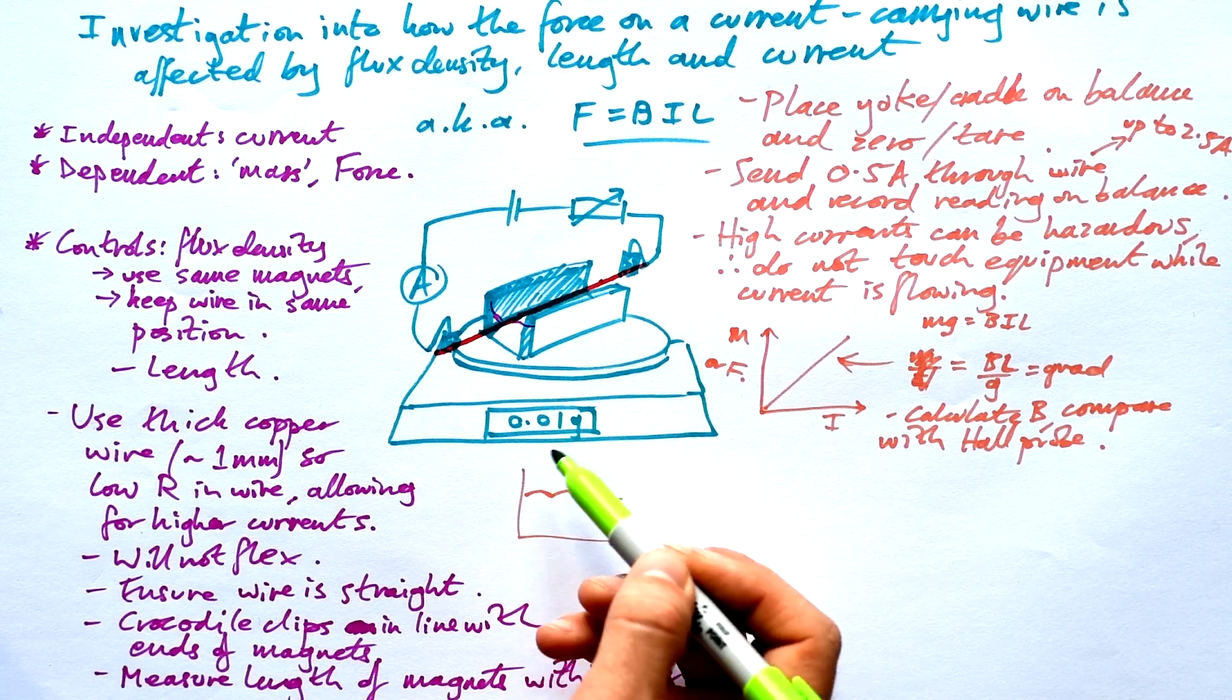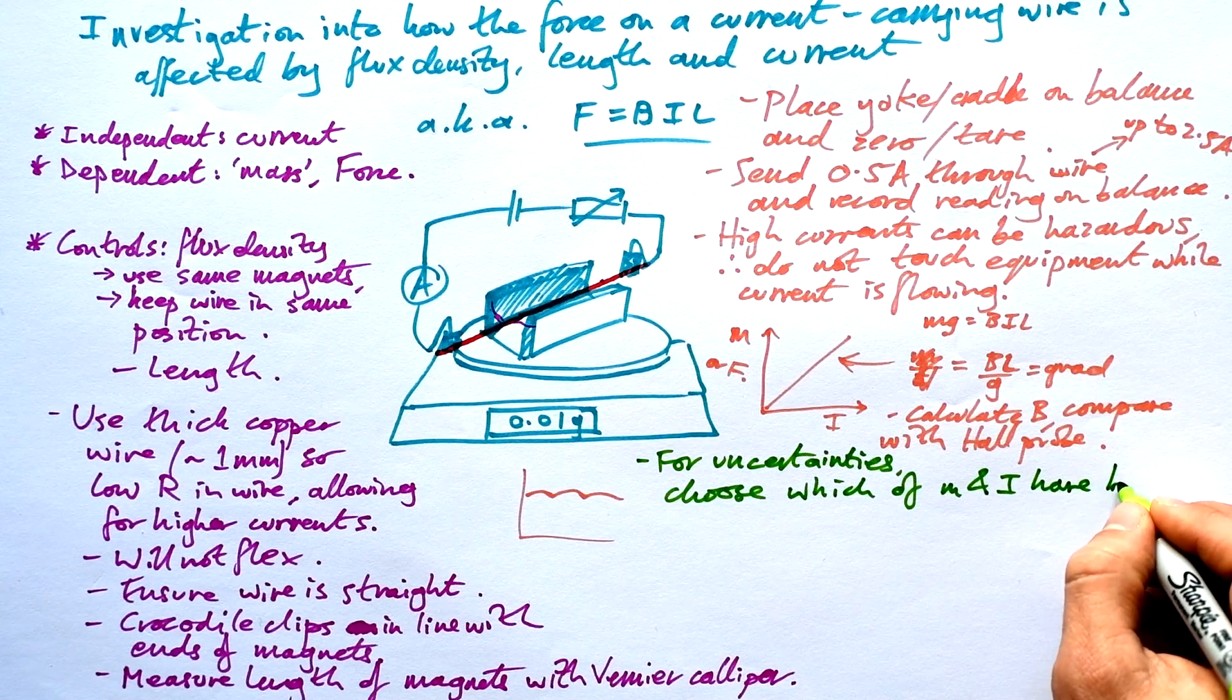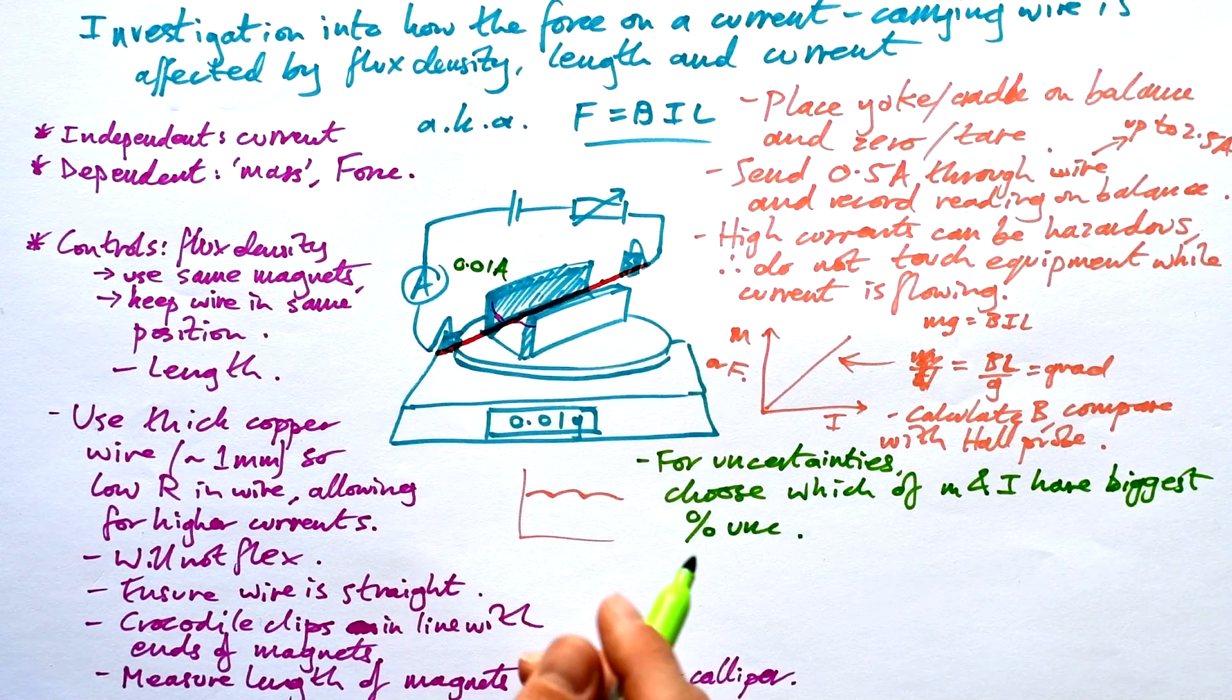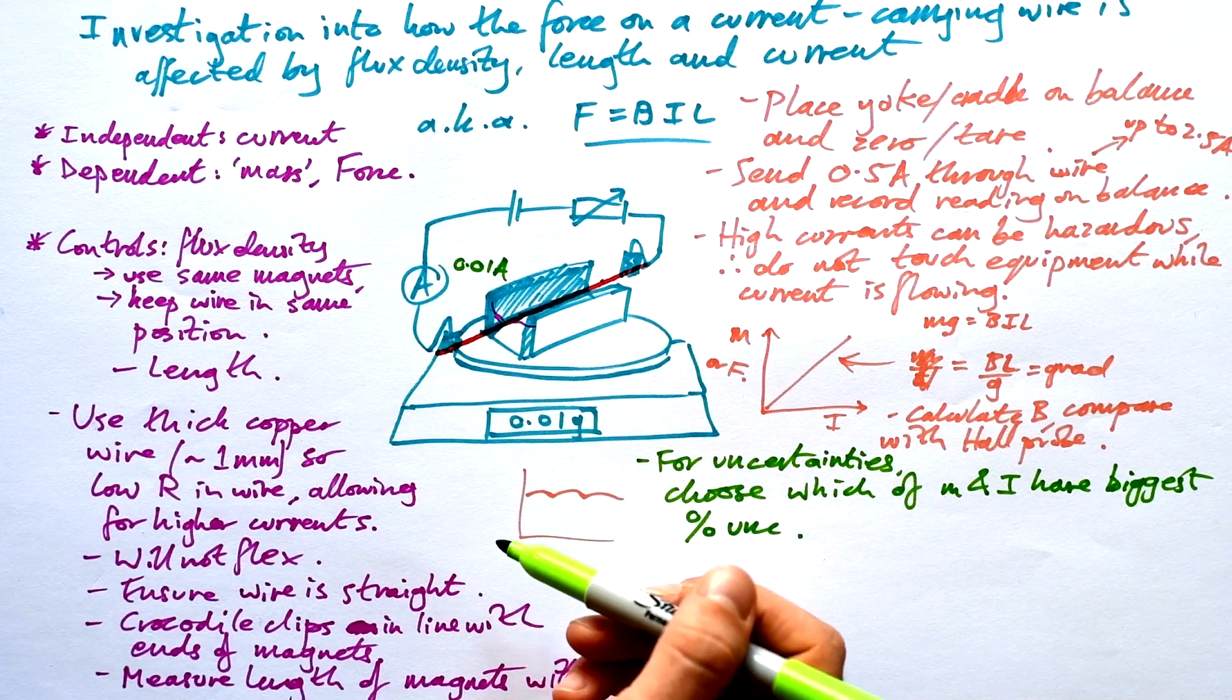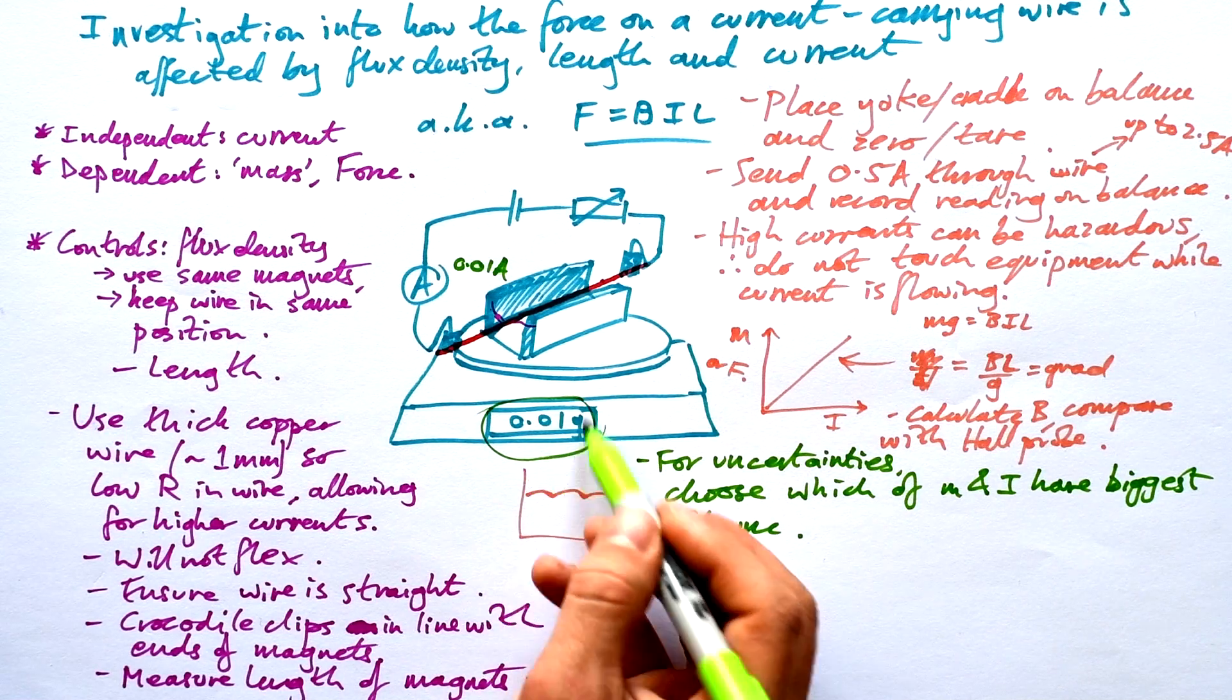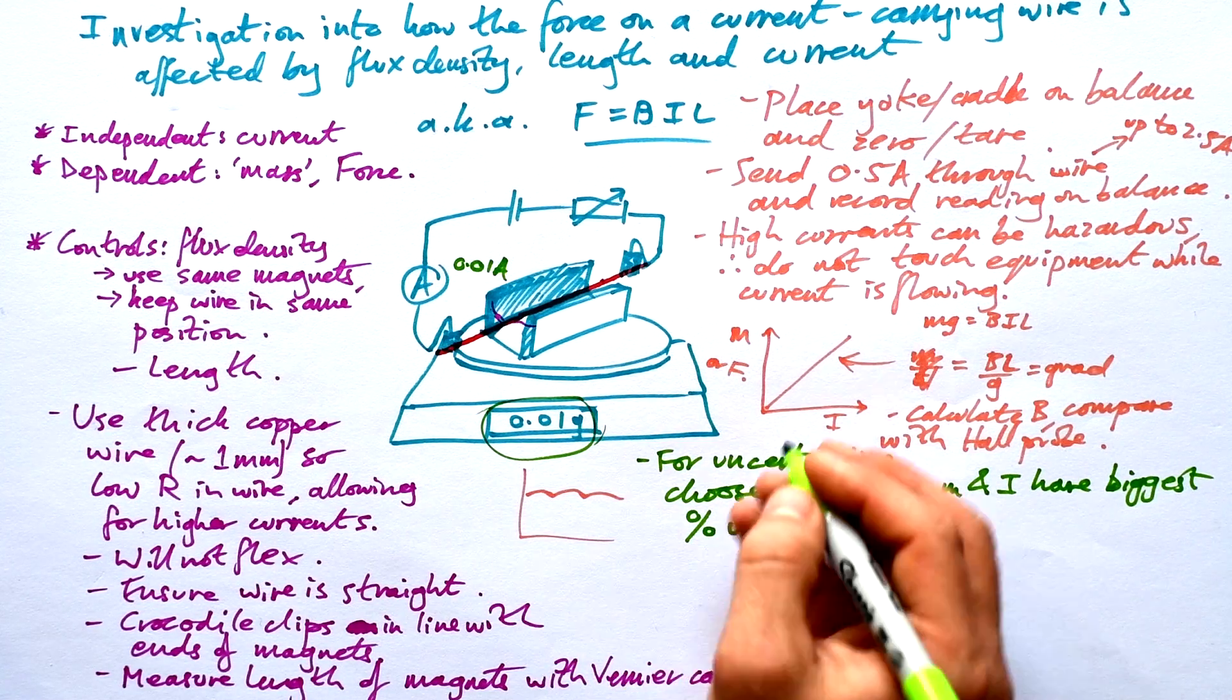Now there is going to be uncertainty due to the resolution. Chances are they're going to be 0.01 grams and 0.01 amps. The best thing to do is go for the one that has the biggest percentage uncertainty. So let's say that my ammeter goes to 0.01 amps and so the resolution is the same for both my ammeter and my balance. However chances are that your balance is going to end up with smaller numbers and so the percentage uncertainty in your readings for the mass is going to be greater than the percentage uncertainty in your currents. So I would go for mass.